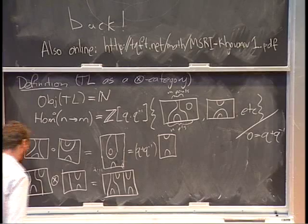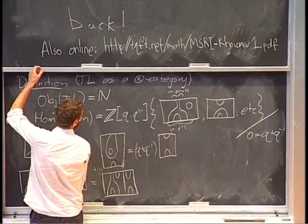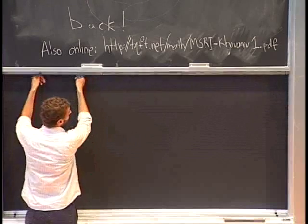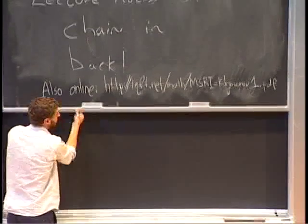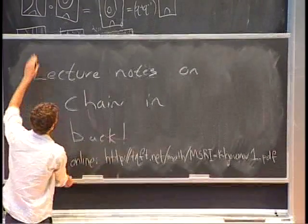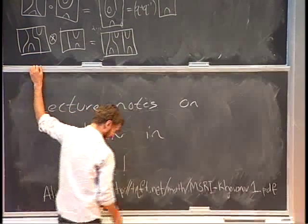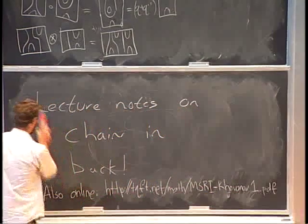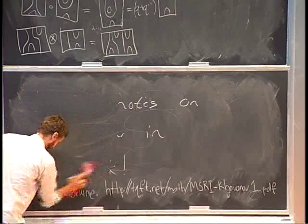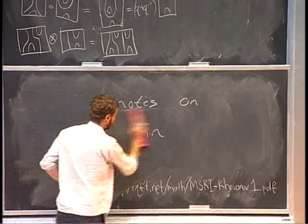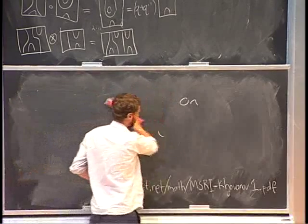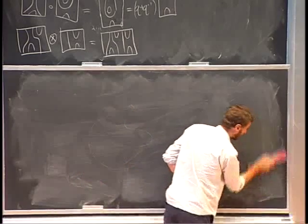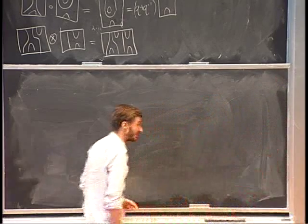To make this a tensor category I need to tell you what composition and tensor product are. Composition: you stack diagrams on top of each other, and then remove circles for factors of Q plus Q inverse. So composing a Hom from two to four with a Hom from four to two gives a Hom from two to two. Tensor product is just sticking diagrams side by side.